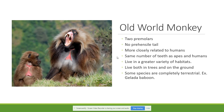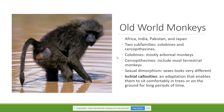Old world monkeys have two premolars. None of them have a prehensile tail. They are more closely related to humans because they share the same number of teeth as apes and humans. Old world monkeys live in a wide variety of habitats — some live exclusively in trees, some live in trees and on the ground, and some, like the gelada baboon shown here, live completely on the ground. We find old world monkeys in Africa, India, Pakistan, and Japan. There are two sub-families: the colobines, which are mostly arboreal, and the cercopithecines, which include most of the terrestrial monkeys.